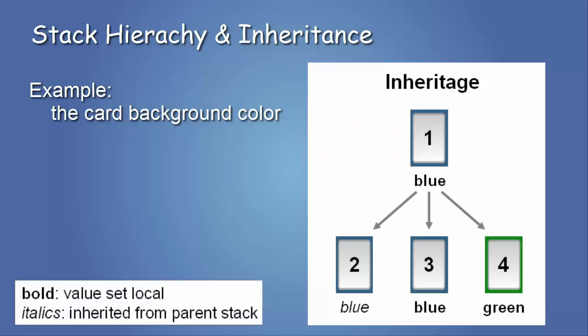Note a detail in the fonts. The property of stacks 1, 3, and 4 is written in bold. In Memorion, this signifies that this color is set explicitly in these stacks. On the other hand, the color of stack 2 is written in italics, signifying this value is inherited from the parent stack.